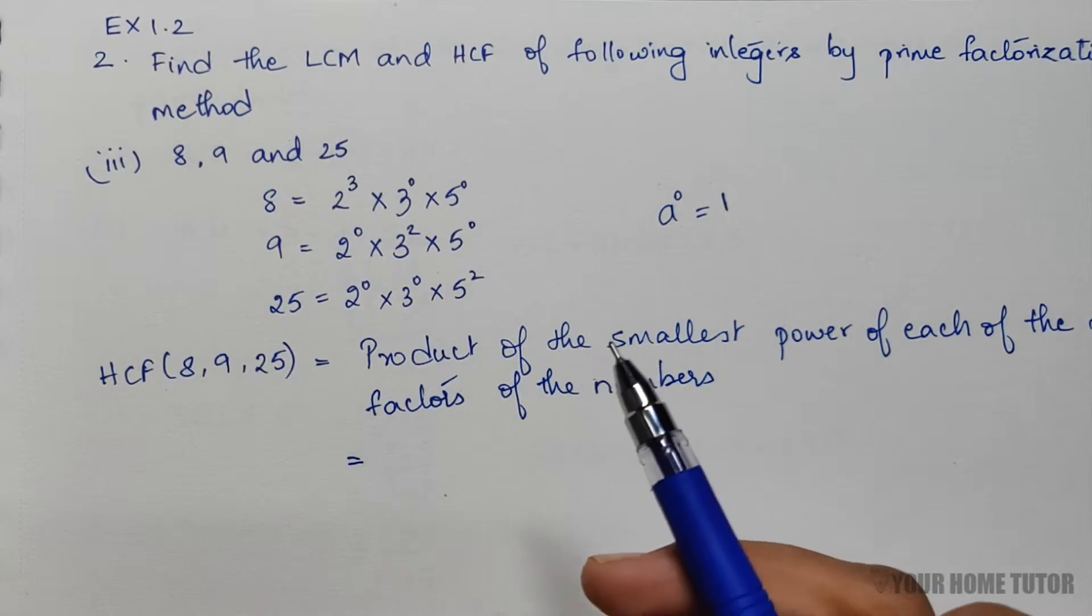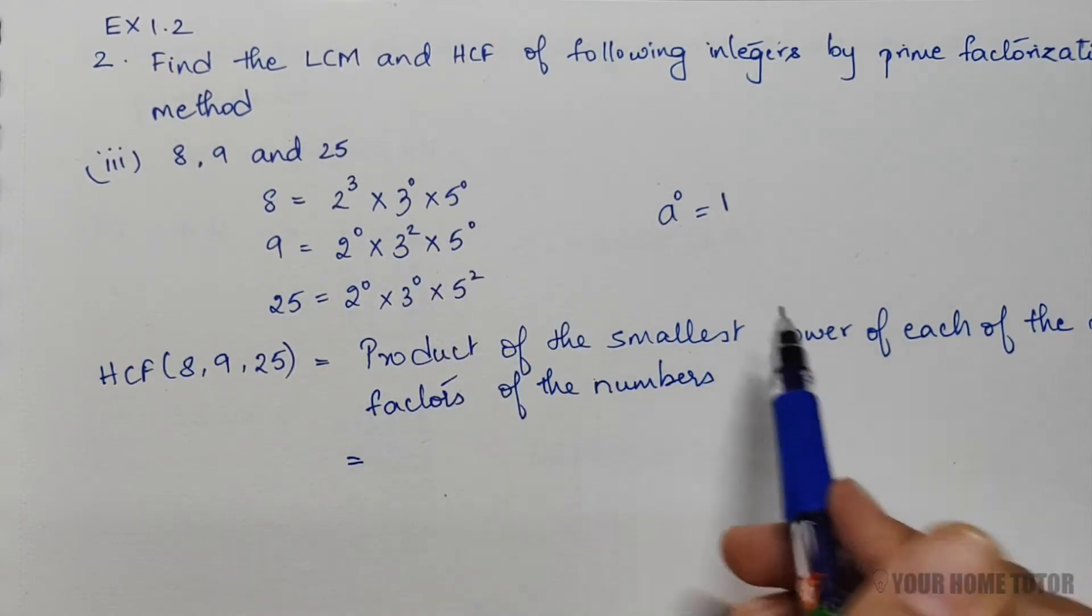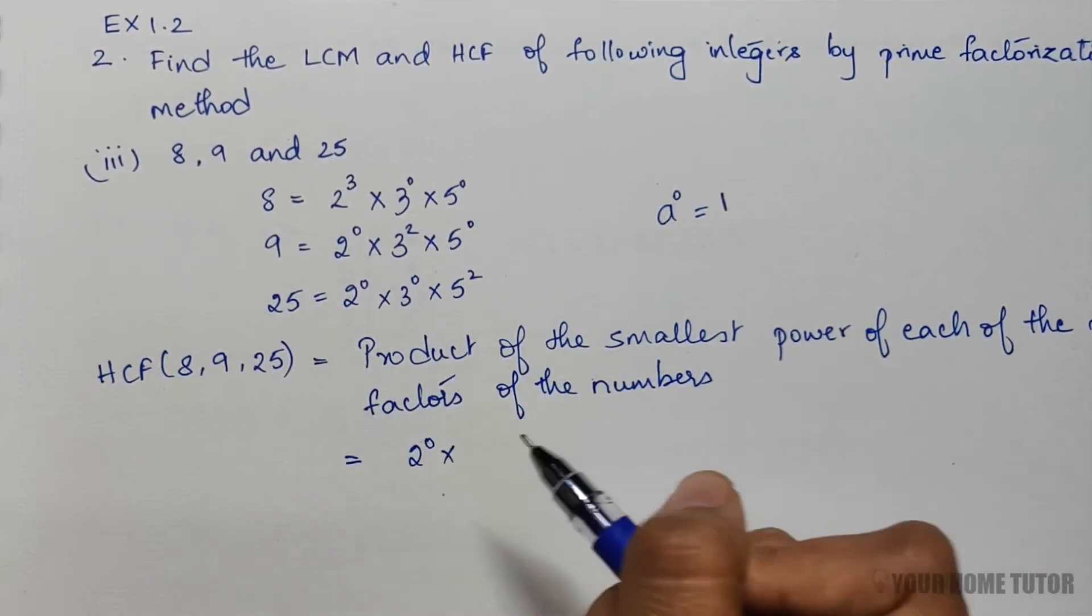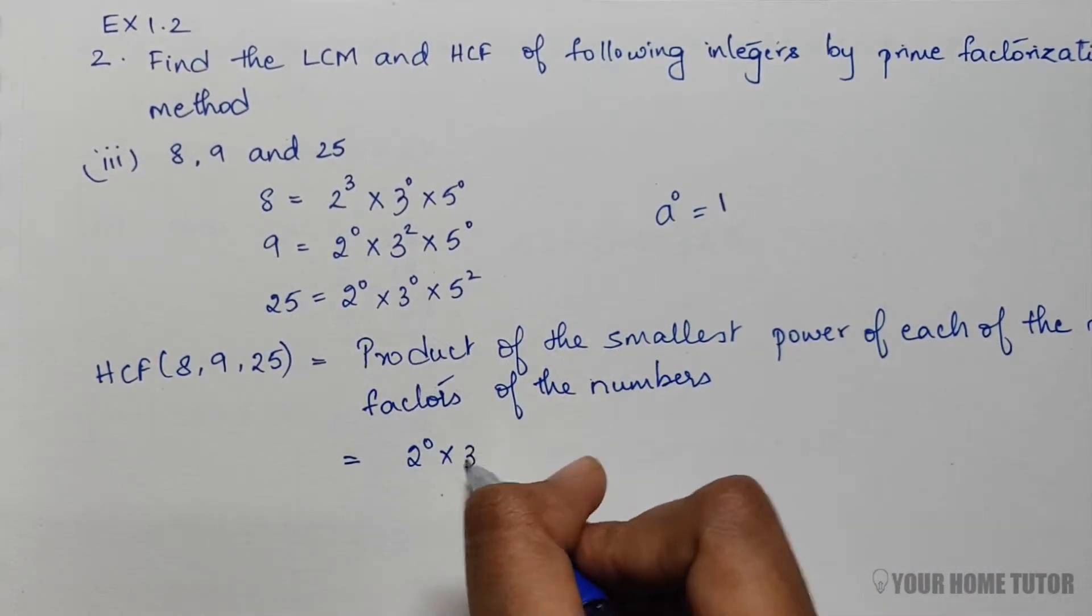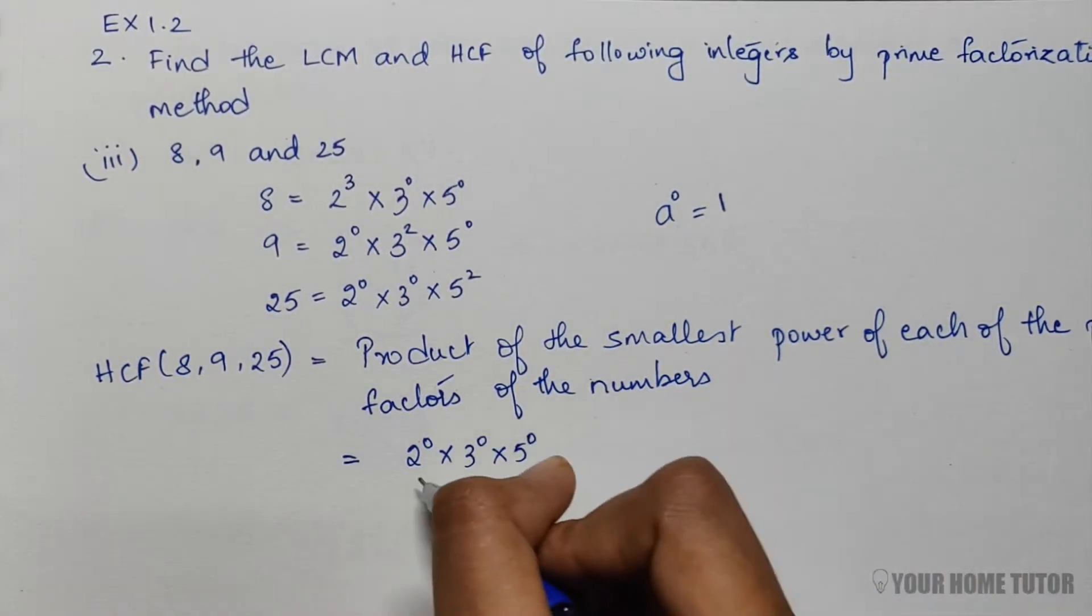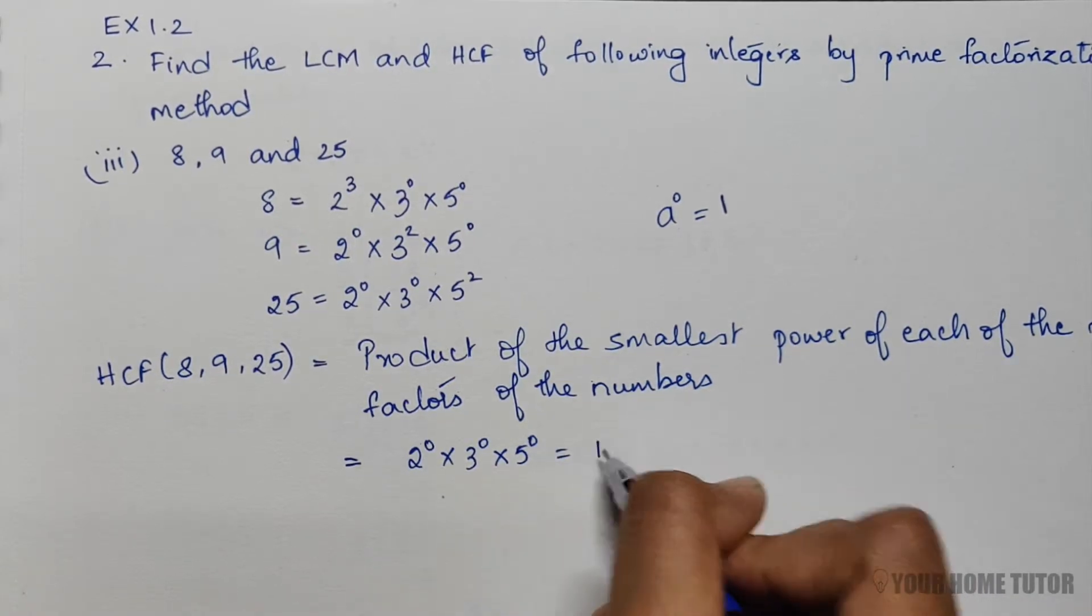Here I have the smallest power of each of the prime numbers. For 2, it's 2⁰. For 3, it's 3⁰. And for 5, it's 5⁰. So if I multiply all three: 1 × 1 × 1 = 1.